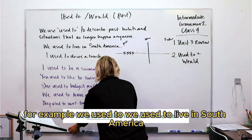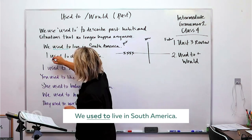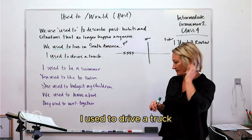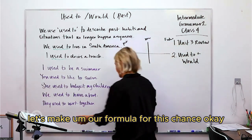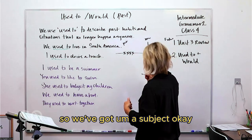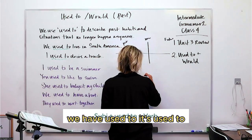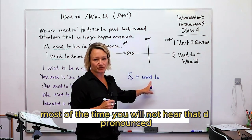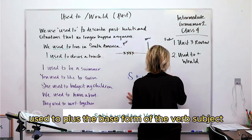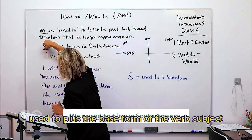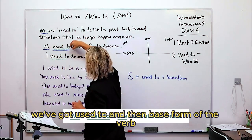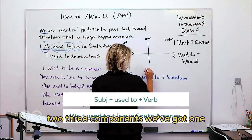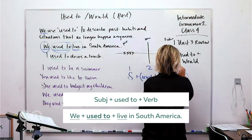For example: 'We used to live in South America' and 'I used to drive a truck.' Let's make the formula for this tense. We've got a subject, then 'used to' — most of the time you will not hear that 'd' pronounced, you'll just hear 'use to' — and then the base form of the verb. So we've got three components: subject, 'used to,' and the base form of the verb.